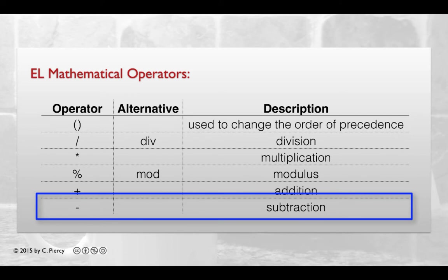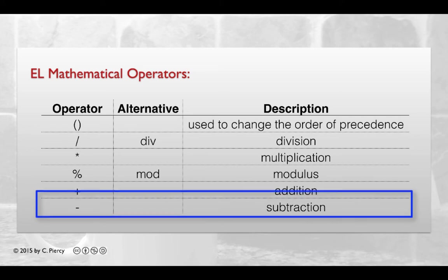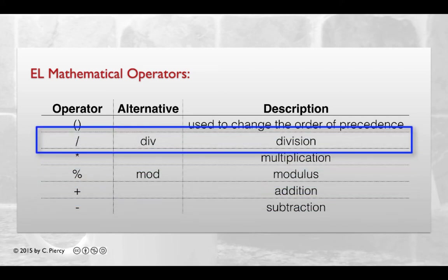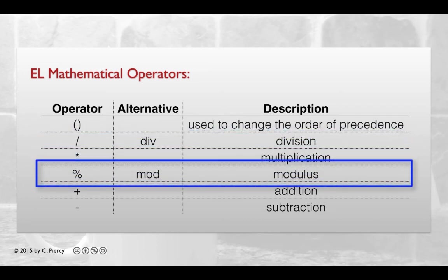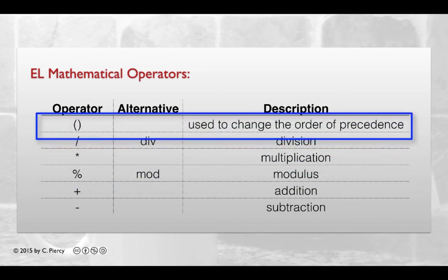You'll note they're the familiar ones, starting with your parentheses all the way to your negation or subtraction. For a couple of these, in expression language, we can alternatively use a keyword. For example, for division, we have a choice of using the slash or the word div. Similarly, for modulus, we can use the percent sign or the word mod.